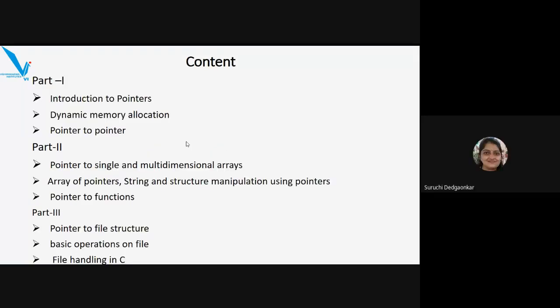This is our first unit's content. In the first part, we will see in detail dynamic memory allocation and pointers. In the second part, we will see how to use pointers with arrays, matrices, and functions. In the third part, we are going to implement file data structures, so file operations we will be doing.